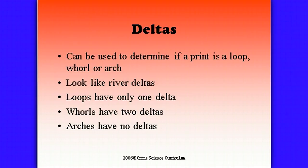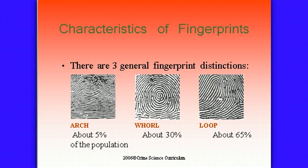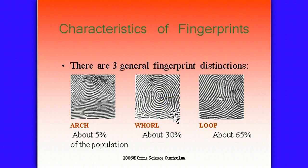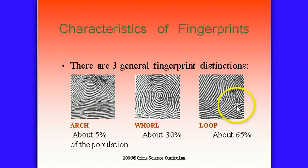It looks kind of like a river delta, and that's why it was named that way. Here's what you need to know: loops only have one delta, whorls have two deltas, and arches have no deltas. Now if we look at our diagram, when I look at the whorl, here is a delta and here is a delta. It's an area where the ridges actually converge and create kind of a triangular shape. Now on the loop, where would you identify the delta? Hopefully you indicated right here, opposite of where the loop forms.